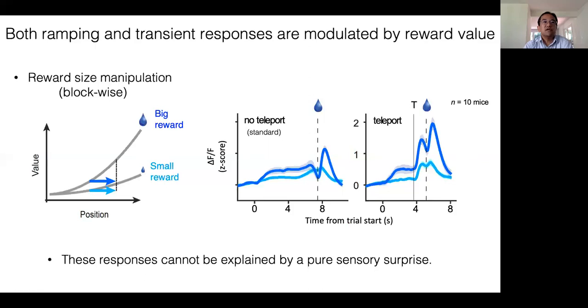Finally, we changed the magnitude of reward in blocks of trials. The trials leading to big reward resulted in a larger ramp in the standard condition, and a larger transient excitation at the time of teleport. Therefore, both the ramp and transient response were scaled by the value of upcoming reward. These responses cannot be explained by pure sensory surprise.